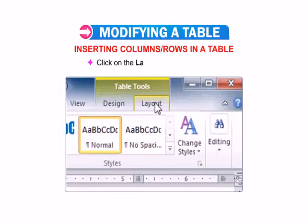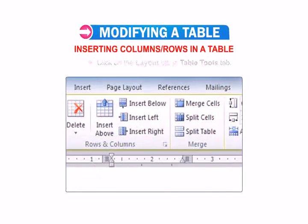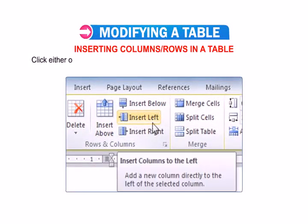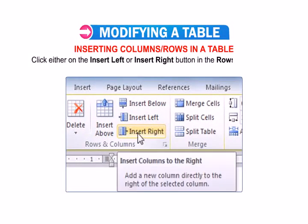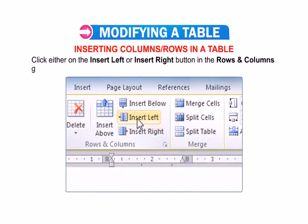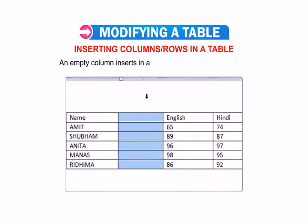Click on the Layout tab in the Table Tools tab. Click either on the Insert Left or Insert Right button in the Rows and Columns group. An empty column inserts in the table as per the chosen option.